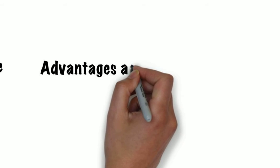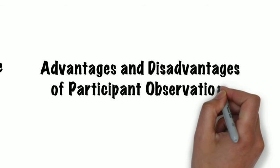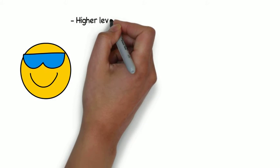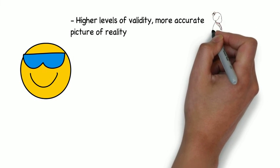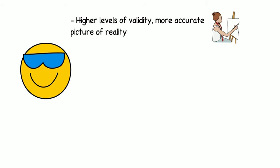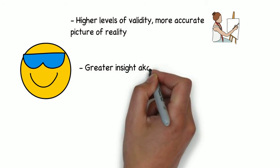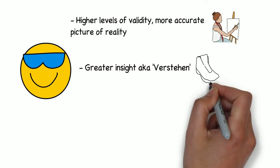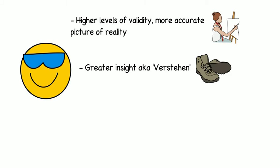In more general terms, sociologists have identified a number of advantages for all participant observations. First, it is argued that there are higher levels of validity than other research methods such as questionnaires, as observations gain rich qualitative data that provides a picture of how a group really lives. Secondly, observations are believed to offer researchers more insight and understanding of social groups. This personal understanding is called Verstehen — a German word meaning empathy, or simply putting yourself in someone else's shoes.